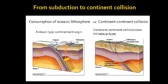Once continents collide they can still converge, imposing a lot of stress and deformation on each other, eventually forming high collisional mountain belts and thickening the continental crust. The lithospheric mantle also thickens, and we see a relic of the ocean that was once subducted breaking off — it has a high density and sinks as detached oceanic lithospheric fragments into the asthenospheric mantle.